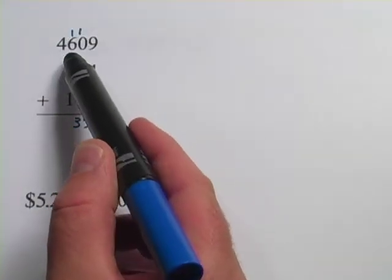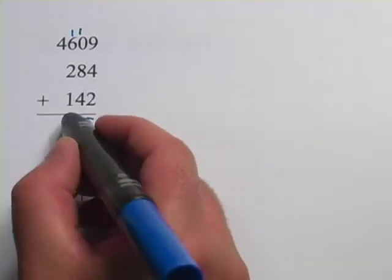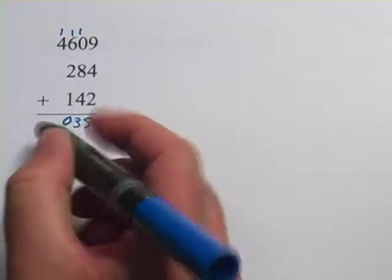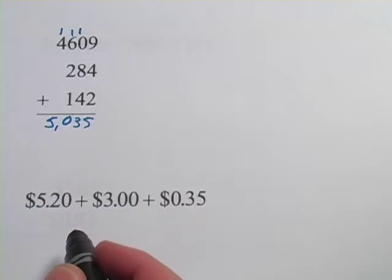And in this column, 1 plus 6 is 7 plus 2 is 9 plus 1 is 10. The 0 goes here and the 1 gets carried. And now in this last column, it's 1 plus 4 and nothing else, so that's 5,035 is our answer there.